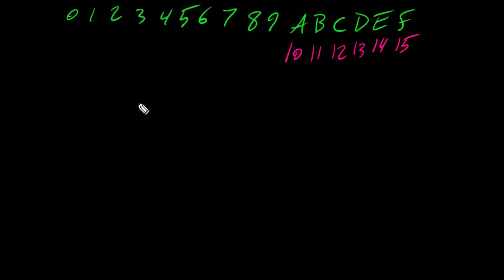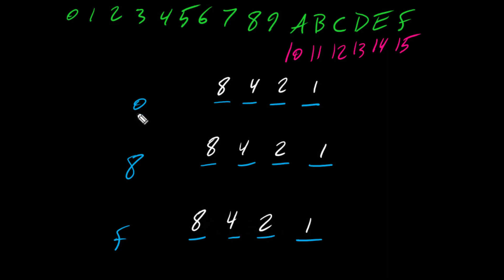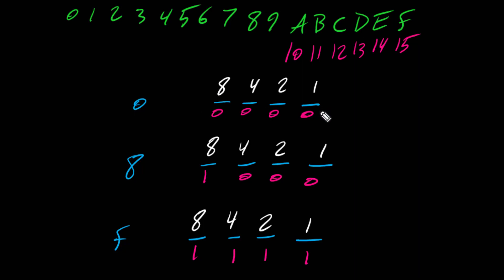We need to keep in mind that for every hexadecimal digit we have 4 bits. For example, hex 0 has 4 bits, hex 8 has 4 bits, and hex F has 4 bits. Using decimal place values of 1, 2, 4, 8: hex 0 is all bits off; hex 8 has only the 8-bit on; hex F has all bits on — 8+4+2+1=15. So every hex digit maps to exactly 4 bits.